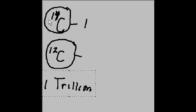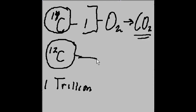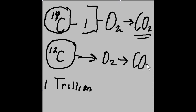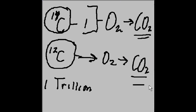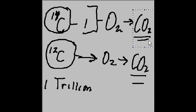Both of these guys get married to O2 and form CO2. But this one is carbon-14 based, while this one gets married to O2 and produces also CO2 — but this one is carbon-12 based. So the same ratio is maintained: for every one trillion carbon-12 based CO2s, there is one carbon-14 based CO2.